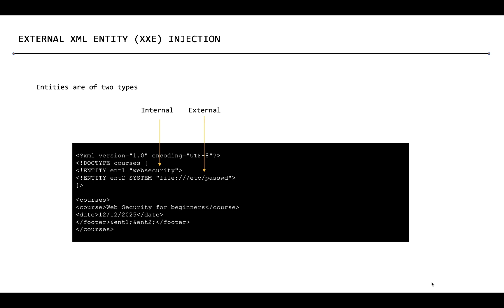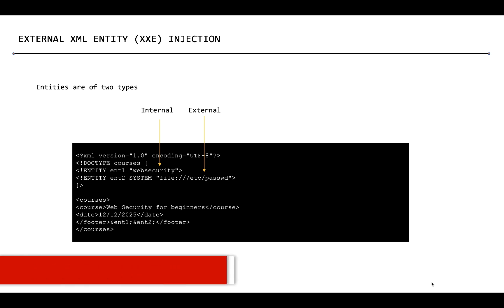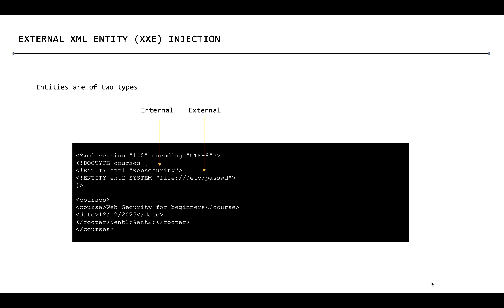These entities are of two types: internal entities and external entities. The first entity shown on the screen is an internal entity. We have used the keyword entity and defined an entity called ENT1 and gave some data to it. So whenever we want to access the data 'web security', we can simply refer to the entity ENT1.